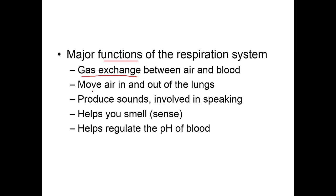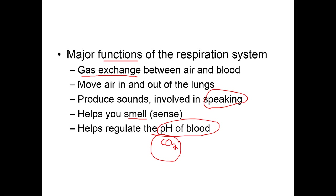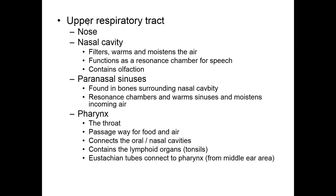Major functions of the respiratory system include gas exchange, movement of air in and out of the lungs, production of sound — we speak and sing because air comes out from the lungs through the vocal cords. It also helps us with smell and regulates the pH of blood. You don't want too much CO2 buildup in your body; if you do, you become too acidic. Breathing helps offset the pH to keep you more neutral. The byproduct is carbonic acid, which you're supposed to breathe out.